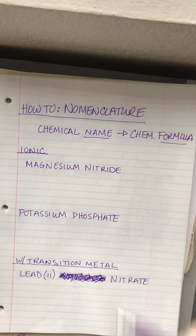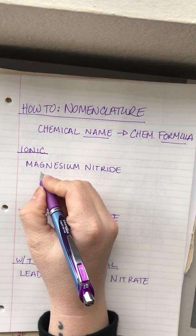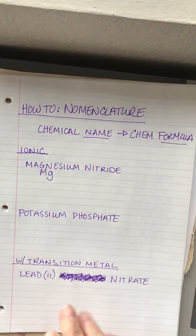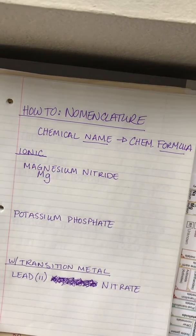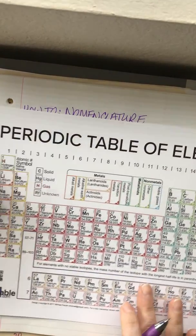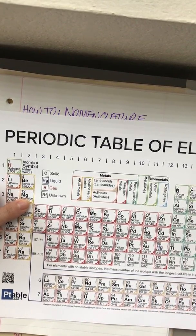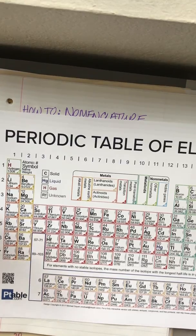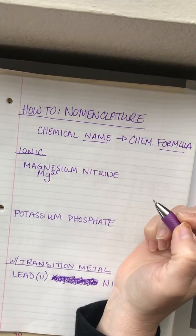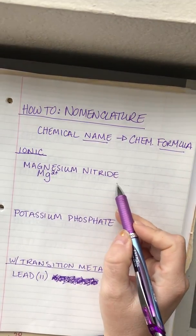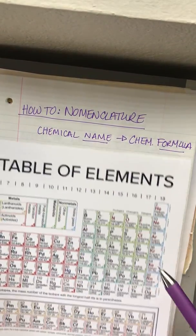First up we have magnesium nitride. Magnesium has the symbol Mg, and if we look at our periodic table we can see that magnesium is in group 2, which means that as a cation it's going to have a plus 2 charge. The suffix '-ide' indicates that it is a monatomic anion.